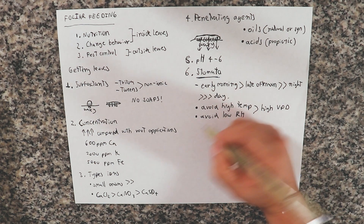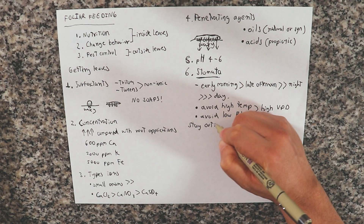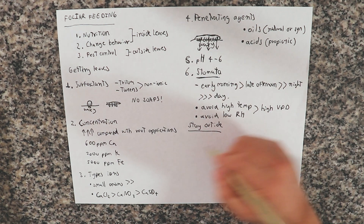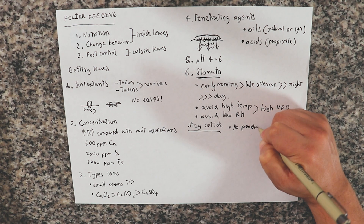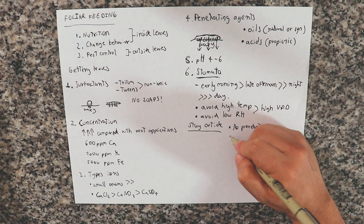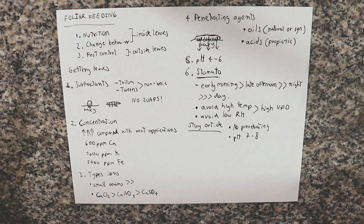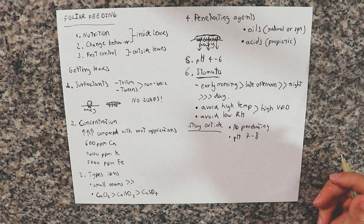When you want to stay outside the leaves for pest control, if you only spray the top side of the leaf that prevents a lot of absorption because you are not targeting the stomata. Using no penetrating agents also reduces leaf penetration significantly. Using a more basic pH, from 7 to 8, also hinders absorption. This approach is used when applying something toxic to a pathogen that you don't want entering the leaves because it is not needed inside and may itself be toxic to the plant inside.